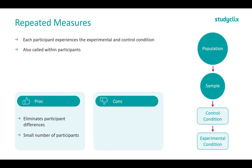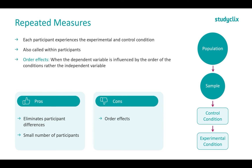A con, however, is that we have what we call order effects. This is where the dependent variable is influenced by the order of the conditions rather than the independent variable. A great example: if we're testing drunk driving using a racing simulator, the first time participants do it they may perform poorly, but the second time they may be better — not due to our experimental condition, but due to experience. They may know the course or how to use the simulator better. So the difference in performance is due to order effects and experience rather than the independent variable.